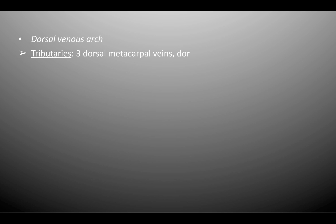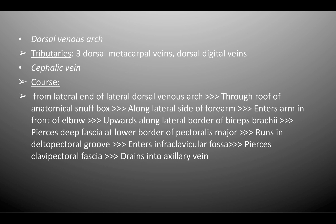The dorsal venous arch has tributaries which are the three dorsal metacarpal veins and the dorsal digital veins. The cephalic vein commences from the lateral end of the dorsal venous arch, goes through the roof of the anatomical snuff box, then along the lateral side of the forearm, and enters the arm in front of the elbow.